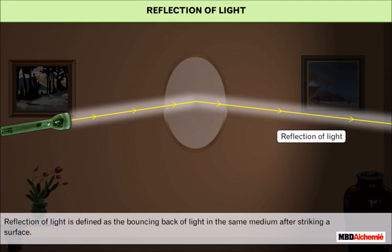Thus, reflection of light is defined as the bouncing back of light in the same medium after striking a surface.